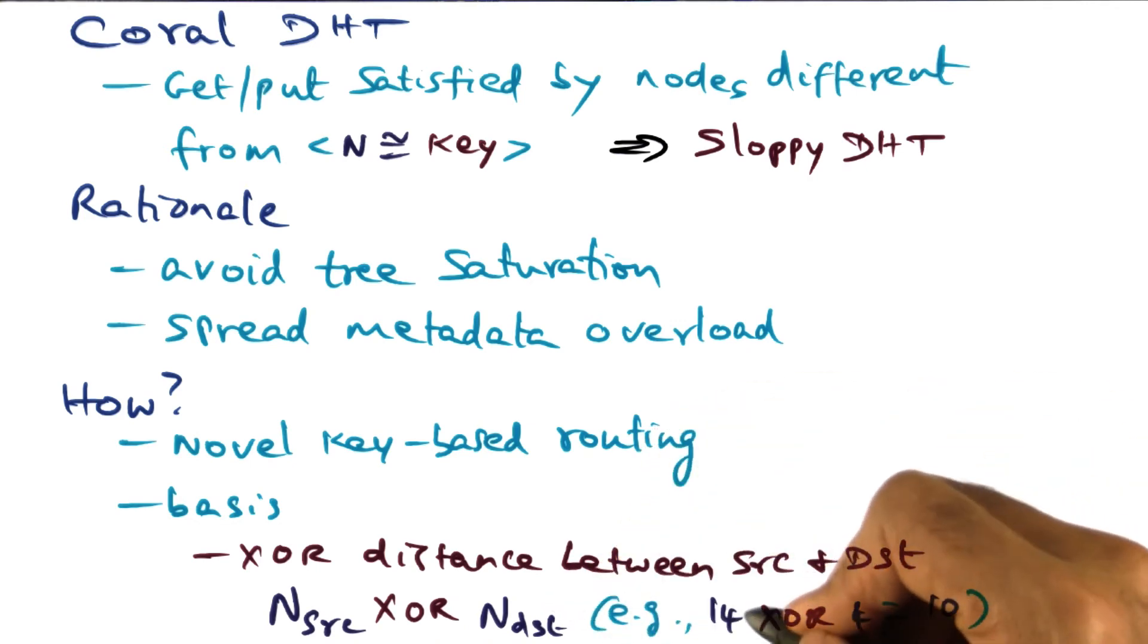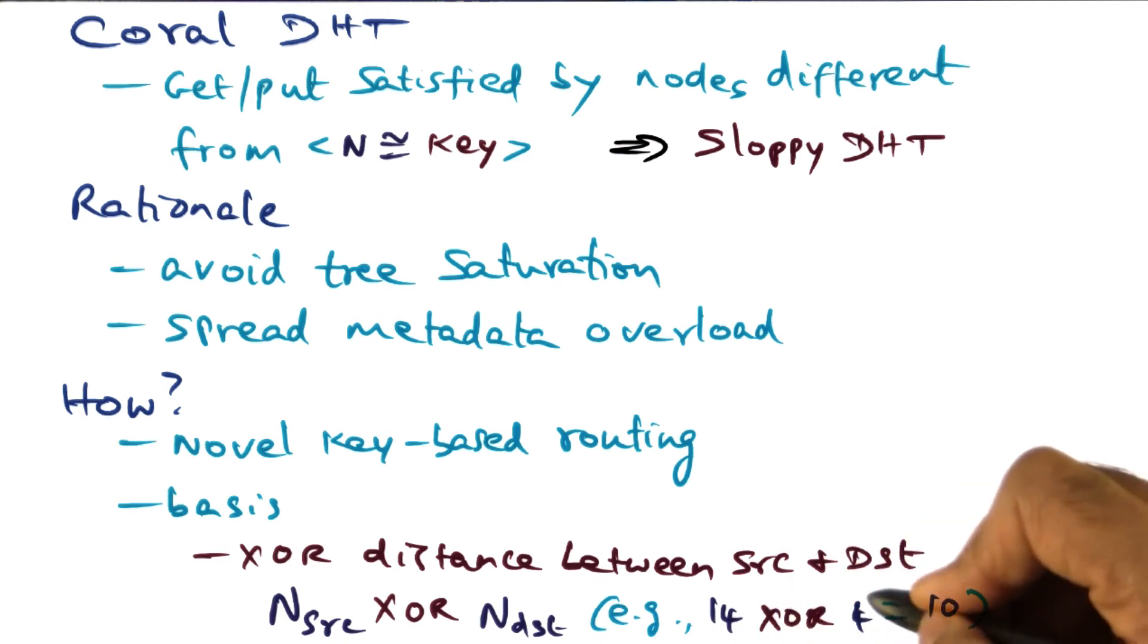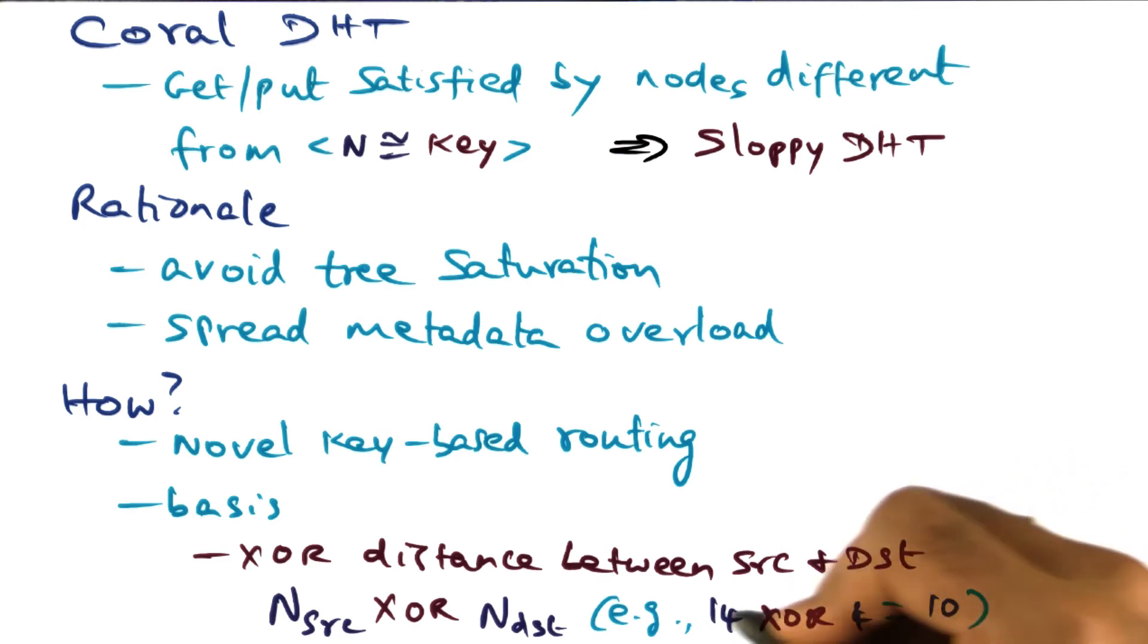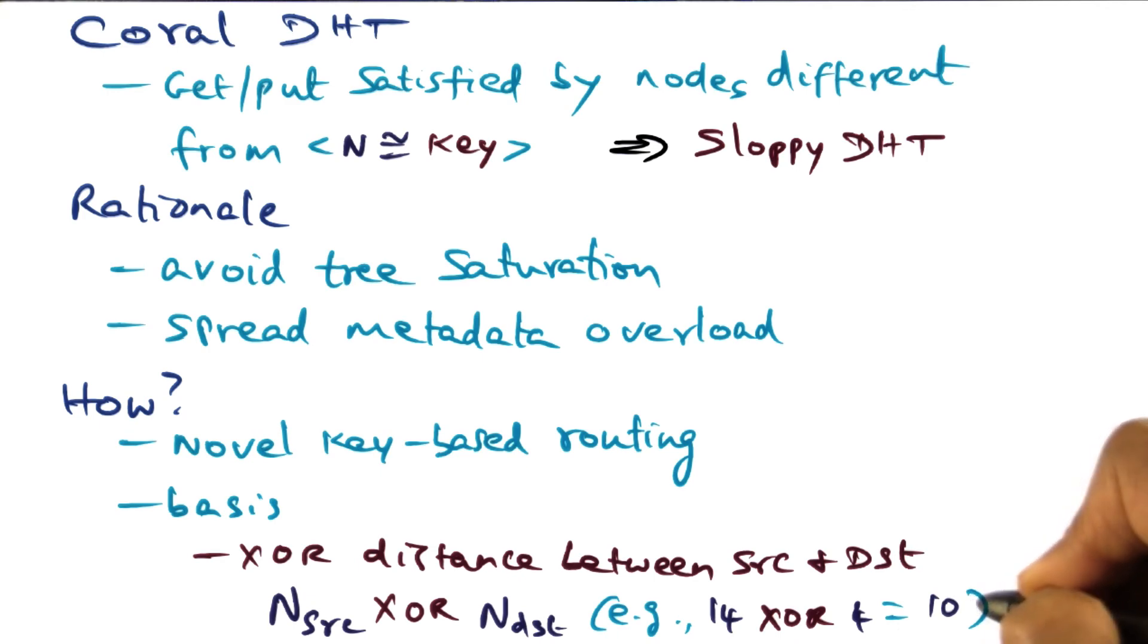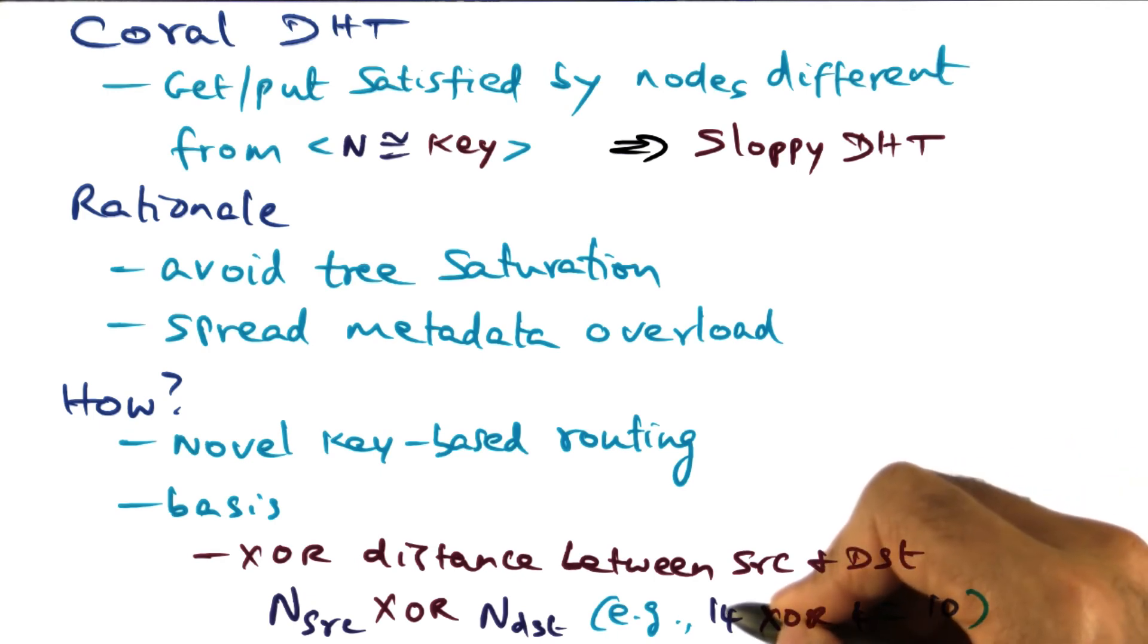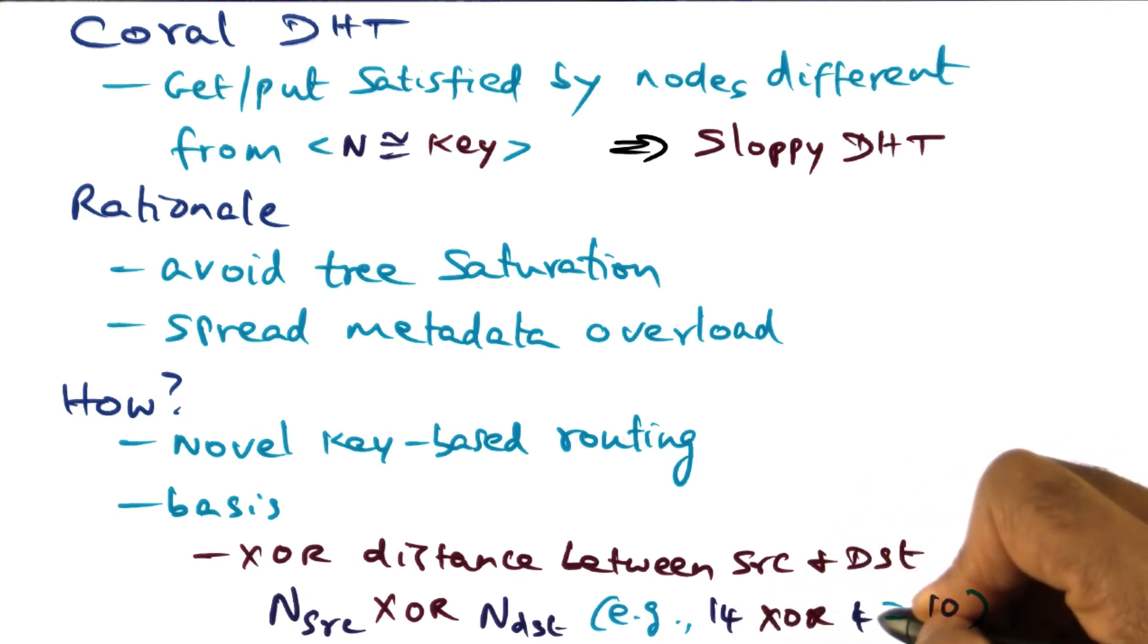So for instance, if the source address is 14 and the destination address is 4, remember that these are node IDs in the node ID space which is at the level of the user, and if you do an XOR of that, you get 10. So 10 is the distance between the source 14 and the destination 4.